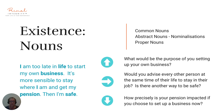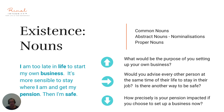Let's look at this statement: 'I am too late in life to start my own business. It's more sensible to stay where I am and get my pension. Then I'm safe.' If we want to take it upwards towards the bigger picture, we may ask: 'What would be the purpose of you setting up your own business?' If we want to take it sideways — what else is that? — we might ask: 'Would you advise every other person at the same time of their life to stay in their job? Is there another way to be safe?' We're addressing the nominalization of safety. And if we want to move downwards: 'How precisely is your pension impacted if you choose to set up a business now?' — getting a lot more detail.